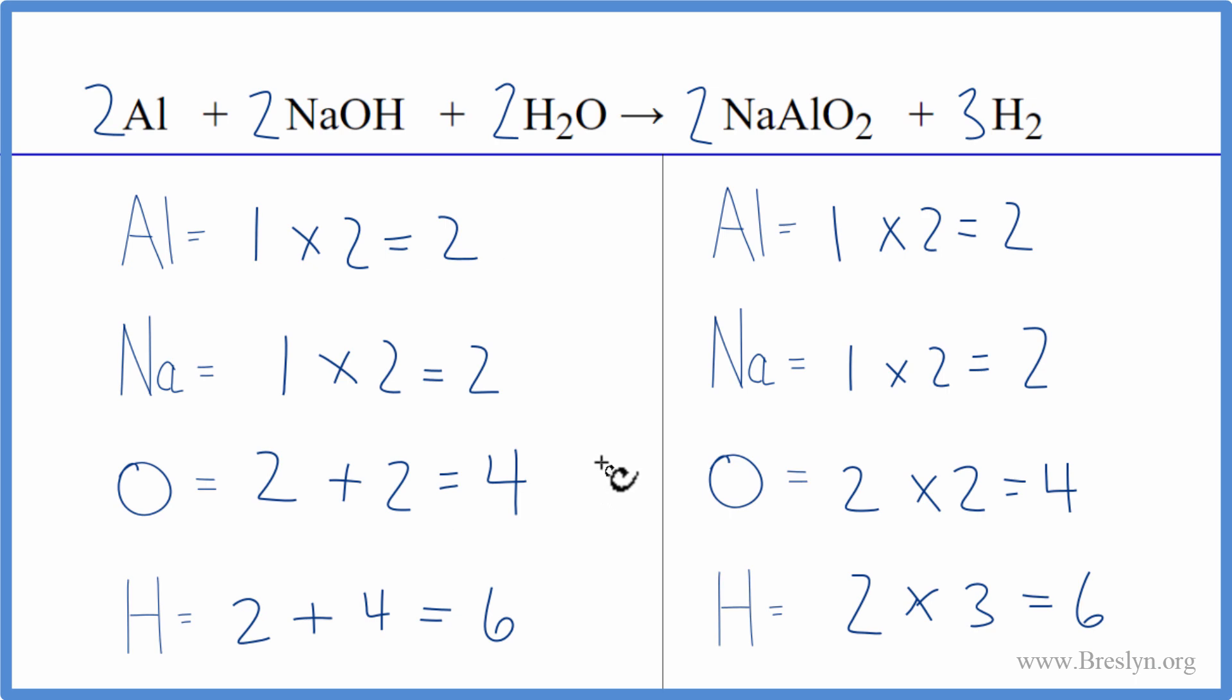Really for this equation here, the key I think is we had that odd number of hydrogens. We got that to an even number. And then eventually we had an odd number of oxygens. And we needed to get that to an even number as well. After we did that, things worked out pretty well.